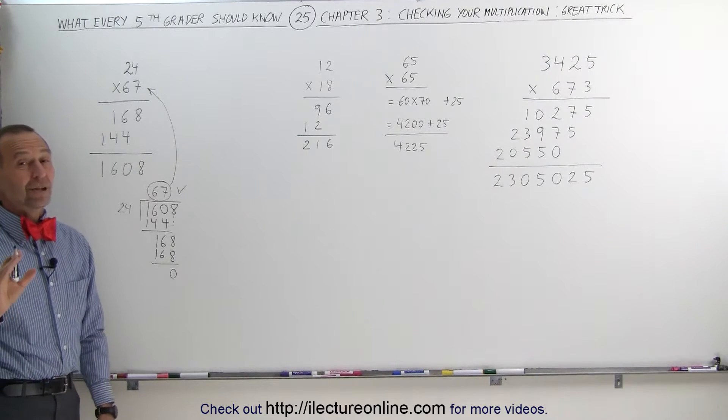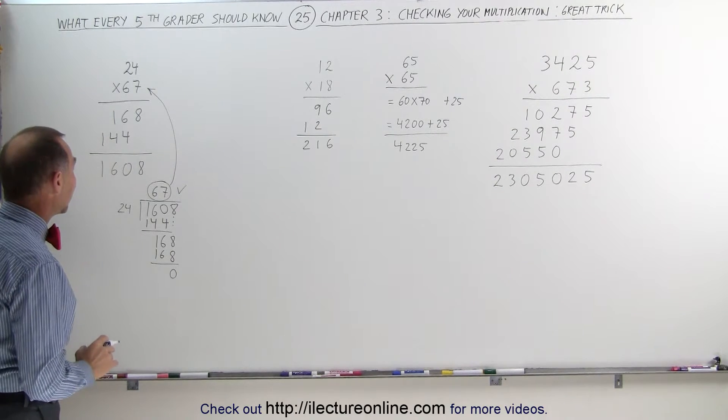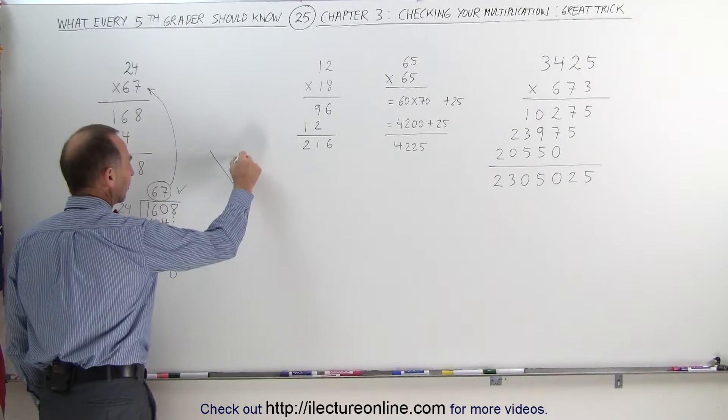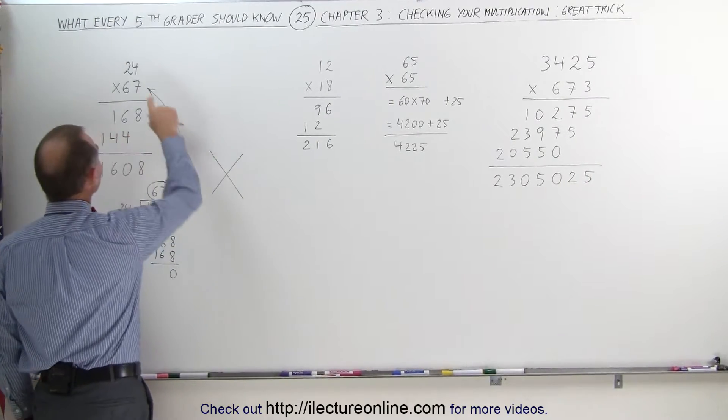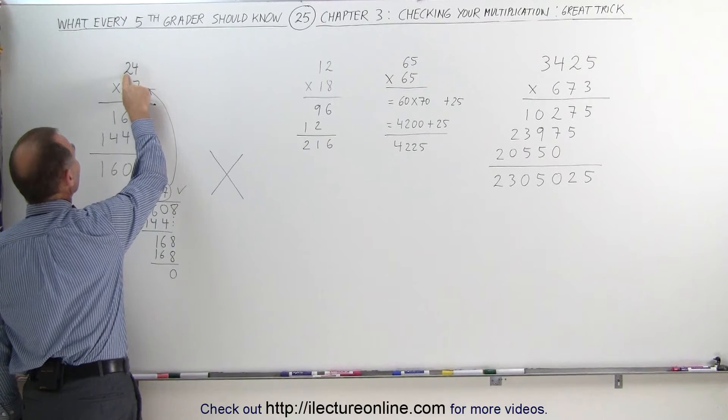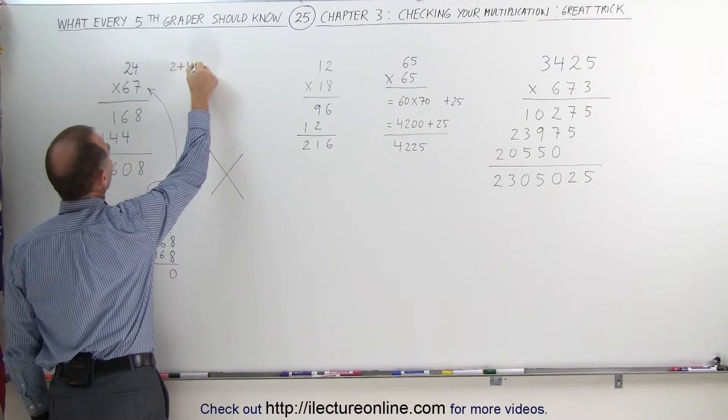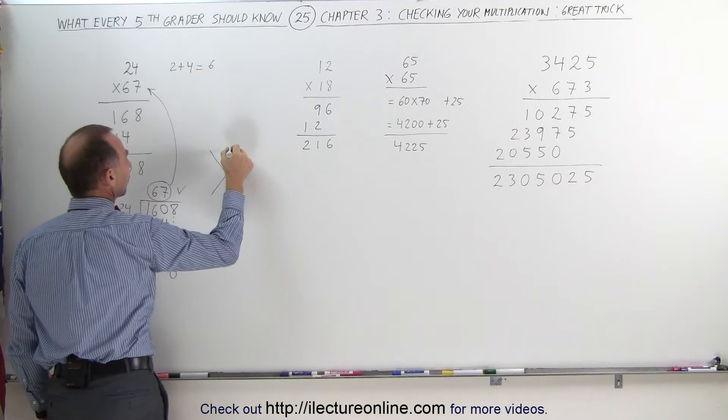That's a lot of work, there's actually a much easier way to do this. Instead, what we can do is we can draw a cross like this, two lines across, then we take the first two numbers over here, we take the number two and four added together, two plus four, that gives us six, and that number goes in here.